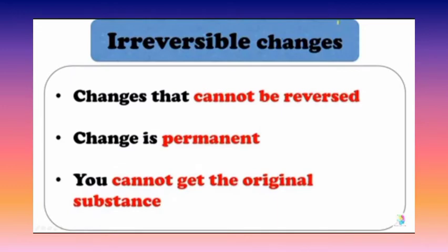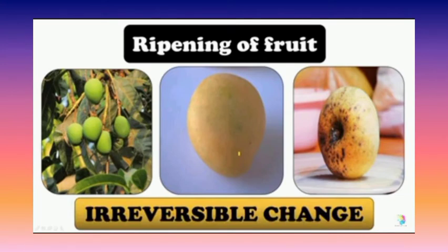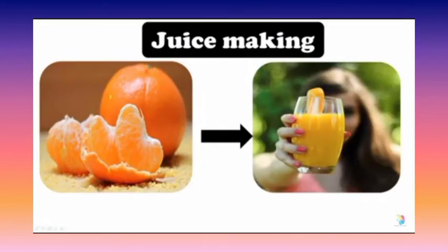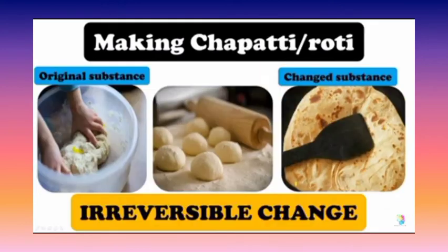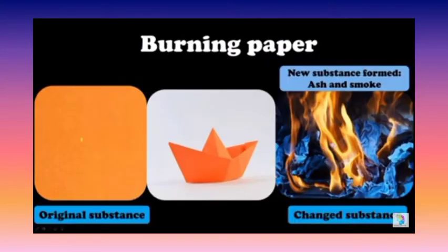Next, irreversible changes. Irreversible changes are the changes that cannot be reversed. This change is permanent — you cannot get the original substance back. For example, ripening of fruit: if a fruit is ripened, it will never go back to its previous form. Some other examples for irreversible changes are juice making, making curd, and burning a paper. These changes we cannot restore to their previous form. Making chapati, burning of agarbati, etc. are some other examples for irreversible changes.